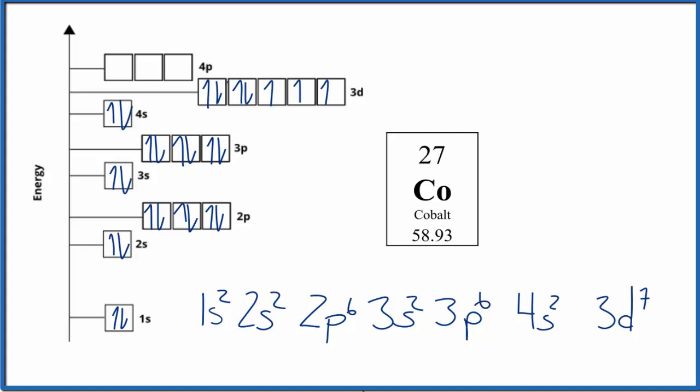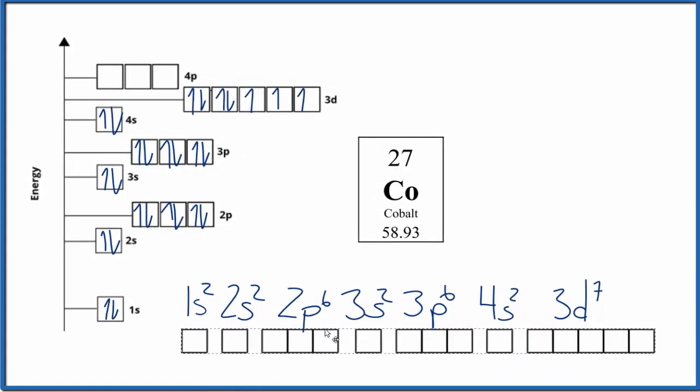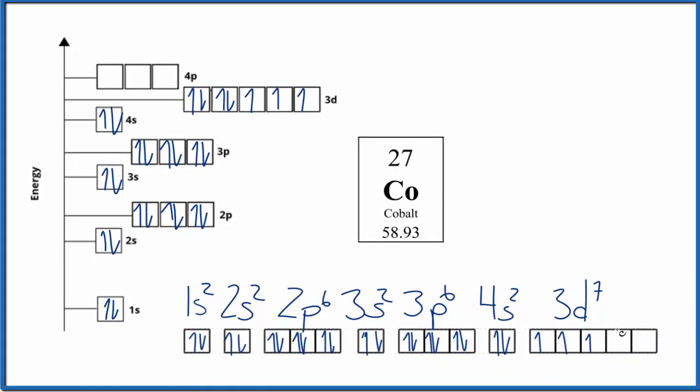You'll also see it written like this sometimes. It's really the same thing. It's just written out in a more horizontal fashion. And again, all we're trying to do is describe where these electrons are around the nucleus of the cobalt atom.